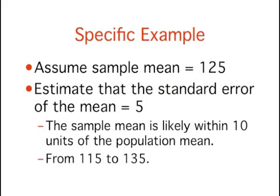To be specific, assume that your sample mean is 125 and that you estimate your standard error to be 5, using methods to be described in a later section. If you have a normal distribution, then you could be pretty sure that your population mean is between 115 and 135, since most of a normal distribution is within two standard deviations of the mean.